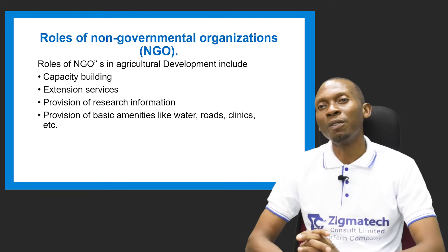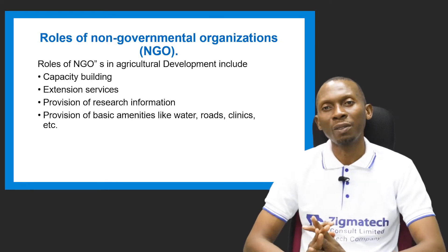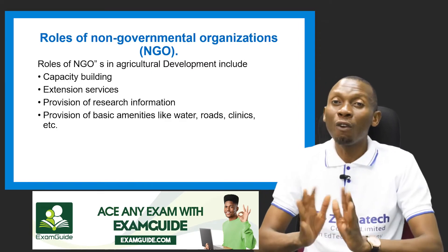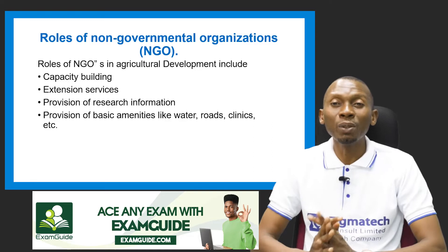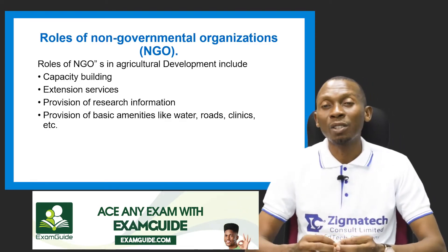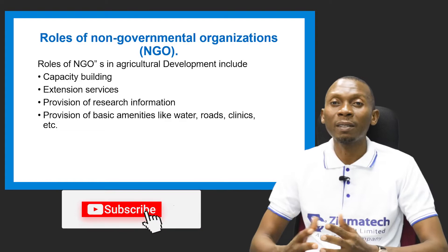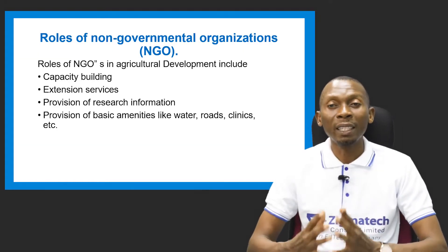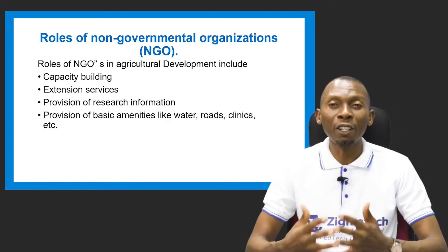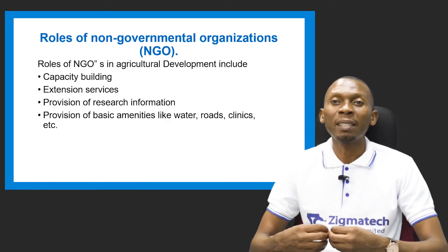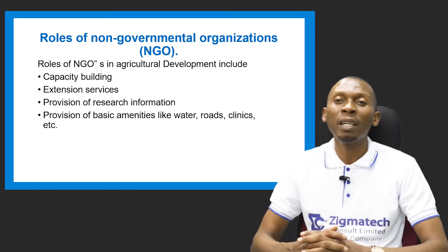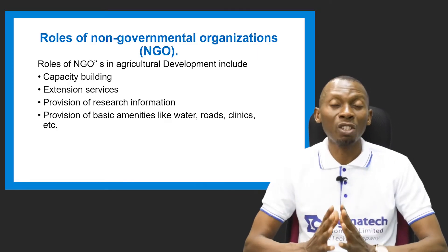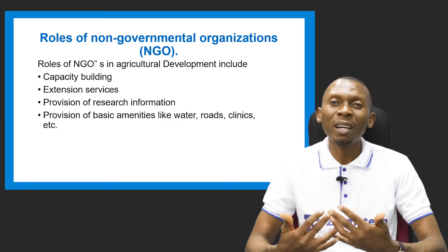Let's take a look at the roles of non-governmental organizations. The roles are covered in four categories. We have capacity building — non-governmental organizations ensure that farmers' capacity, that is their production level, is stepped up. The knowledge and the technical know-how they need in order to boost production is increased or improved upon.